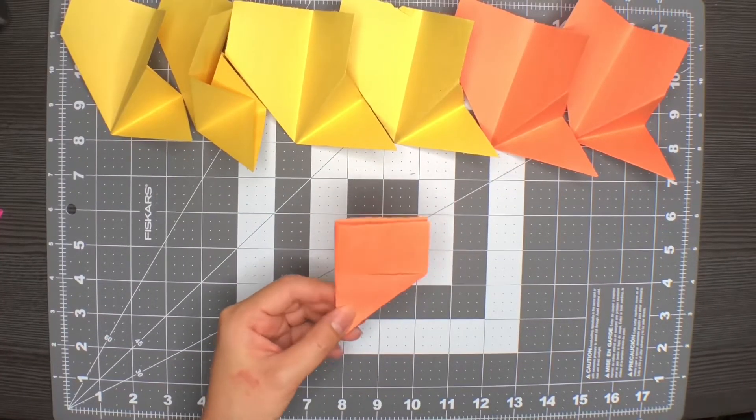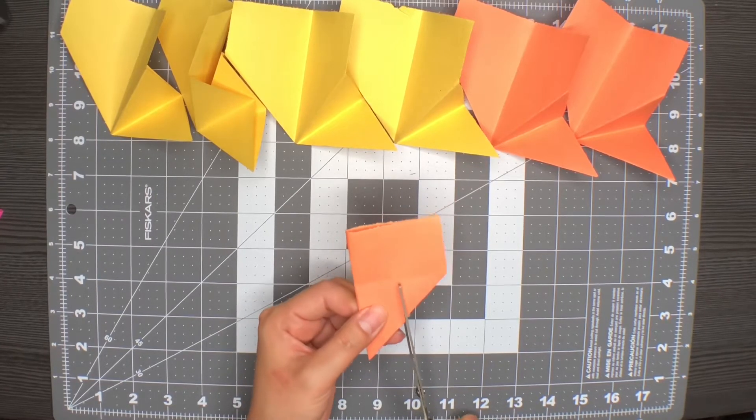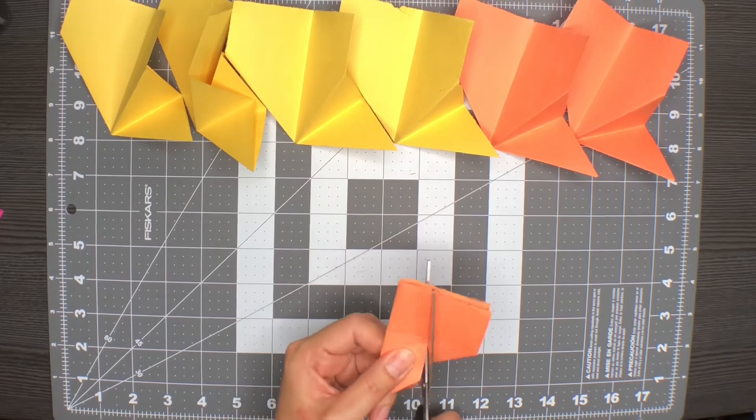Using your scissors, we will cut out the petals. Here I am making it pointed, but you can make these rounded if you would like, or even squared off.